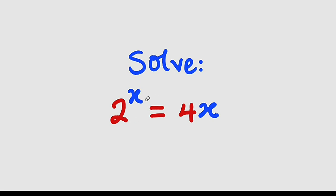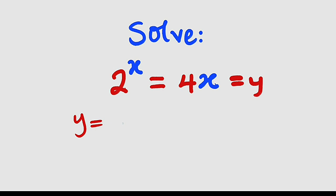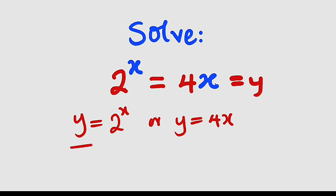Since 2 to the power of x is exactly the same as 4x, we can equate them both to y, which implies that y could be equal to 2 to the power of x or equal to 4x. We can graph these two functions separately and notice the point of intersection. By clear inspection, x=4 is a solution because 2 to the power of 4 is 16 and 4 times 4 is 16. But is 4 the only solution? This is why we want to graph it.